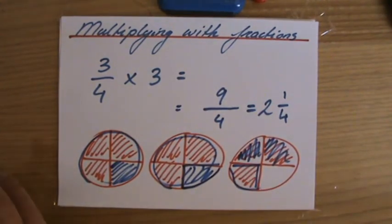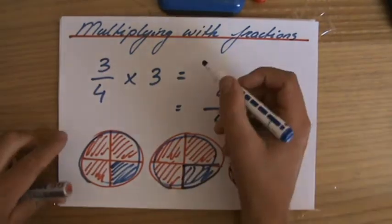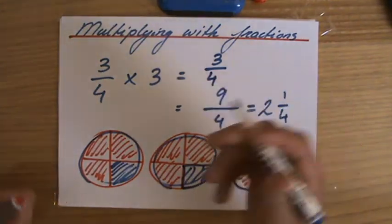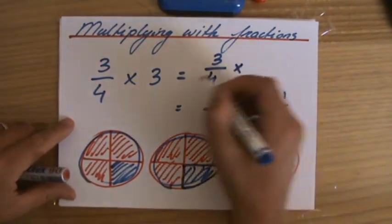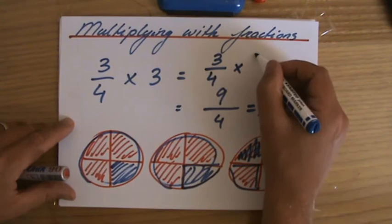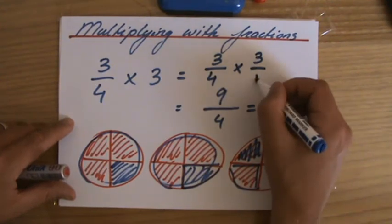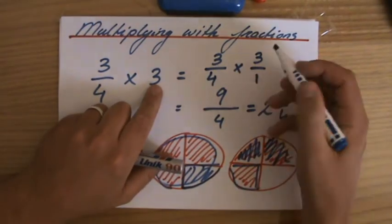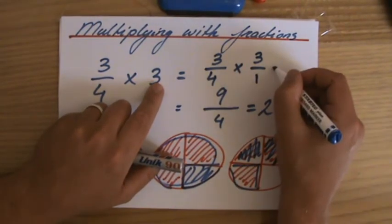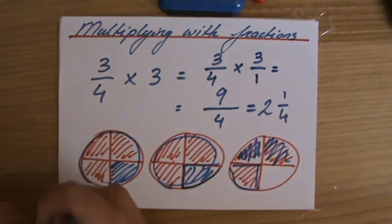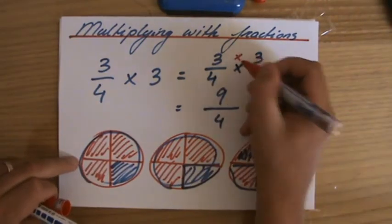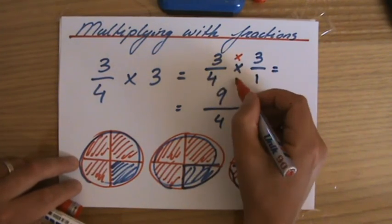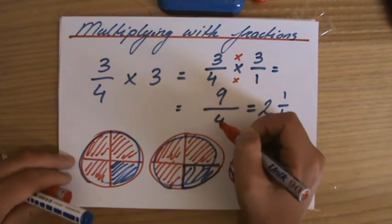Now, before we move on to the next video, what I'd like to write here is this is what you're actually doing. When you are multiplying with fractions, the 3 as a fraction is 3 over 1. Do we agree with that? The number 3, the 3 units is 3 over 1. If you are multiplying fractions, you multiply the numerators with each other, 3 times 3, that's 9. And you multiply the denominators with each other, 4 times 1 is 4.